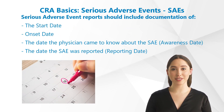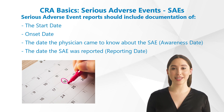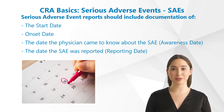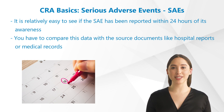Serious adverse events should include documentation of the start date, onset date, the date the physician came to know about the serious adverse event — the awareness date — and the date the serious adverse event was reported — the reporting date. This makes it relatively easy to see if the serious adverse event has been reported within 24 hours of its awareness.